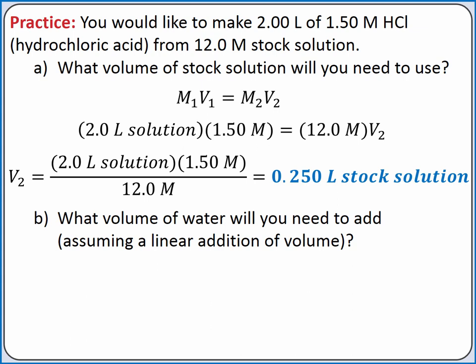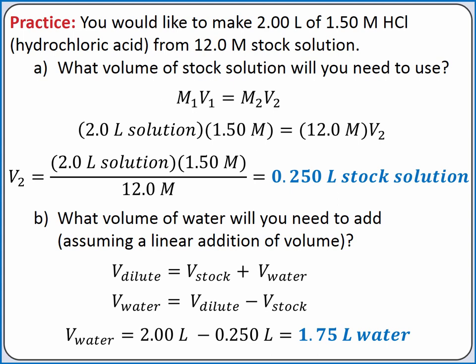Next, we'll calculate the volume of water we need assuming a linear addition of volumes. To create our dilute solution, we're adding together a volume of stock solution and a volume of water. We can rearrange this equation to solve for our volume of water. We want 2 liters of dilute solution and we're using 0.25 liters of concentrated stock solution. So we should need to add about 1.75 liters of water.